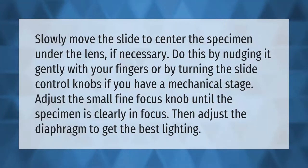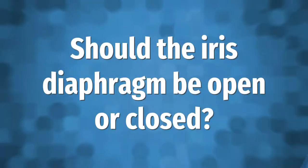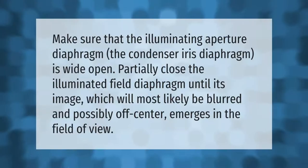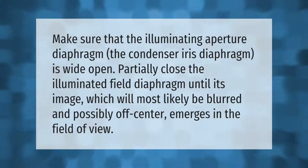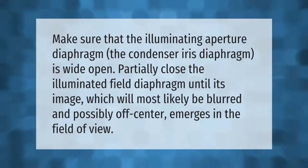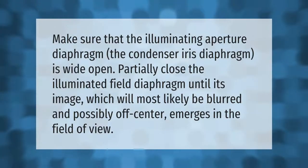Adjust the diaphragm to get the best lighting. Make sure that the illuminating aperture diaphragm — the condenser iris diaphragm — is wide open. Partially close the illuminated field diaphragm until its image, which will most likely be blurred and possibly off-center, emerges in the field of view.